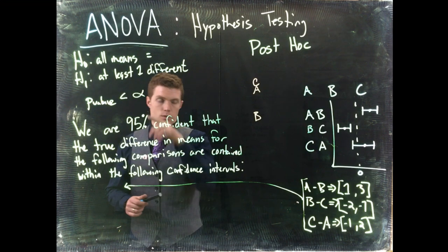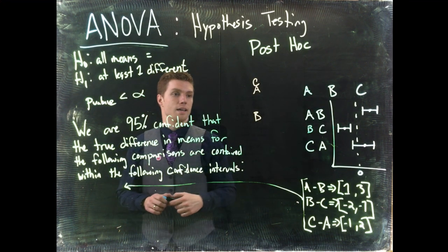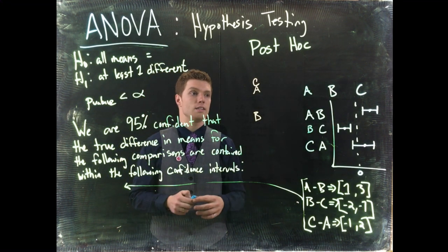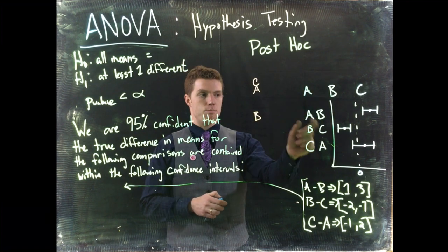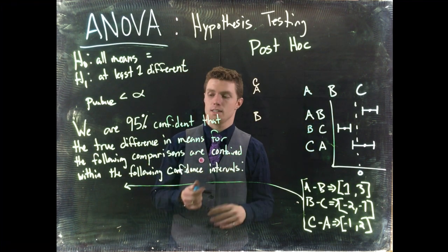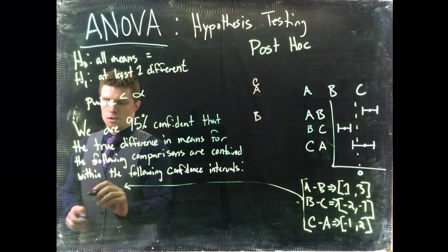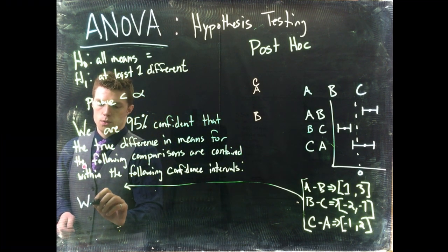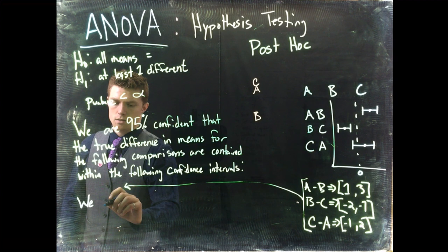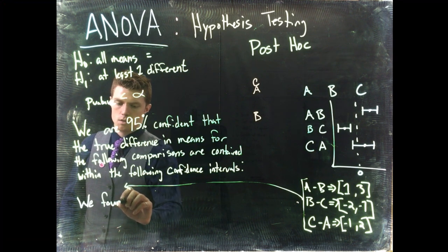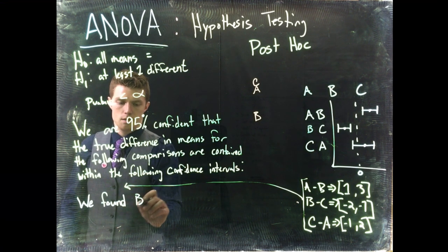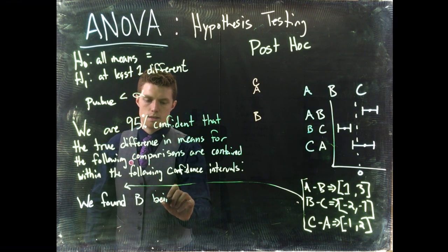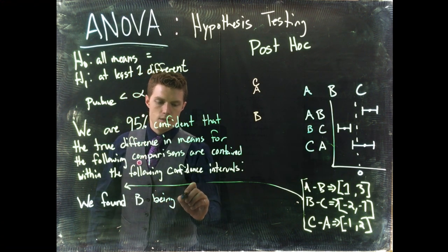So what we can start off by saying is we could talk about all this either by talking about A compared to B and B compared to C, or we can shortchange it. We can say that we found B being significantly...